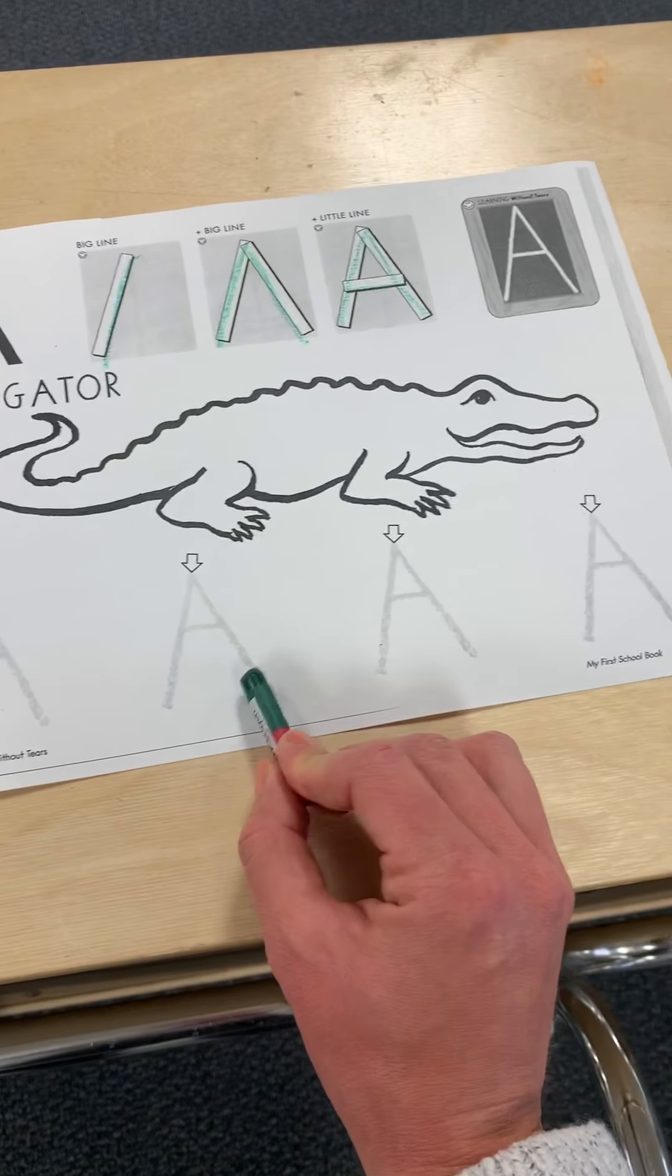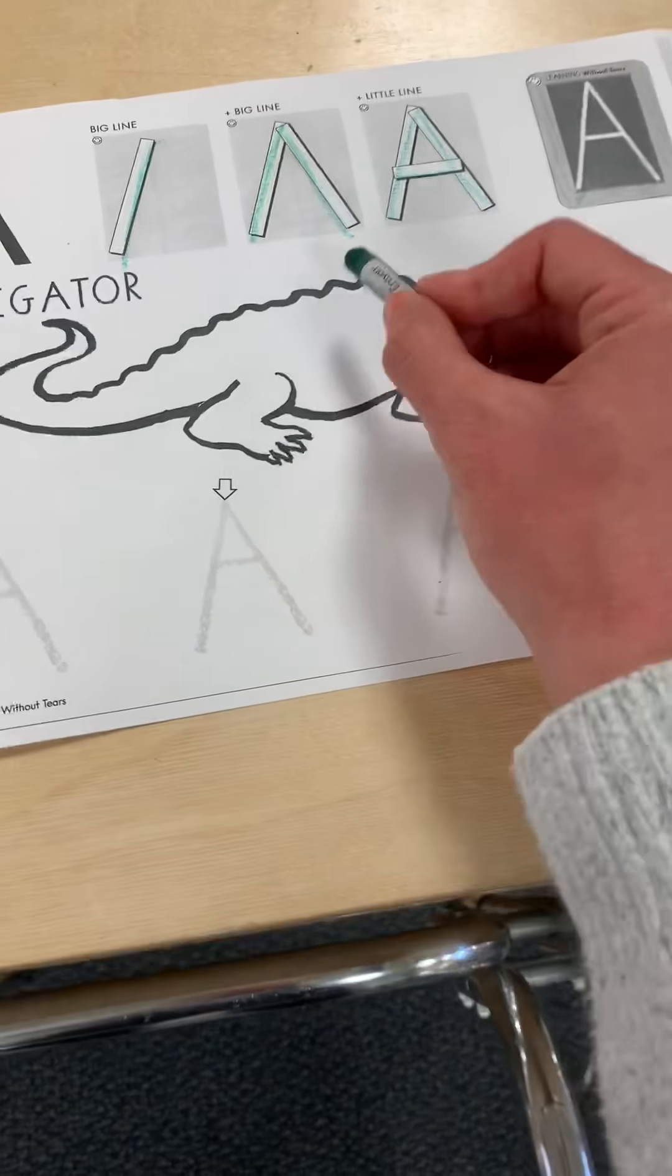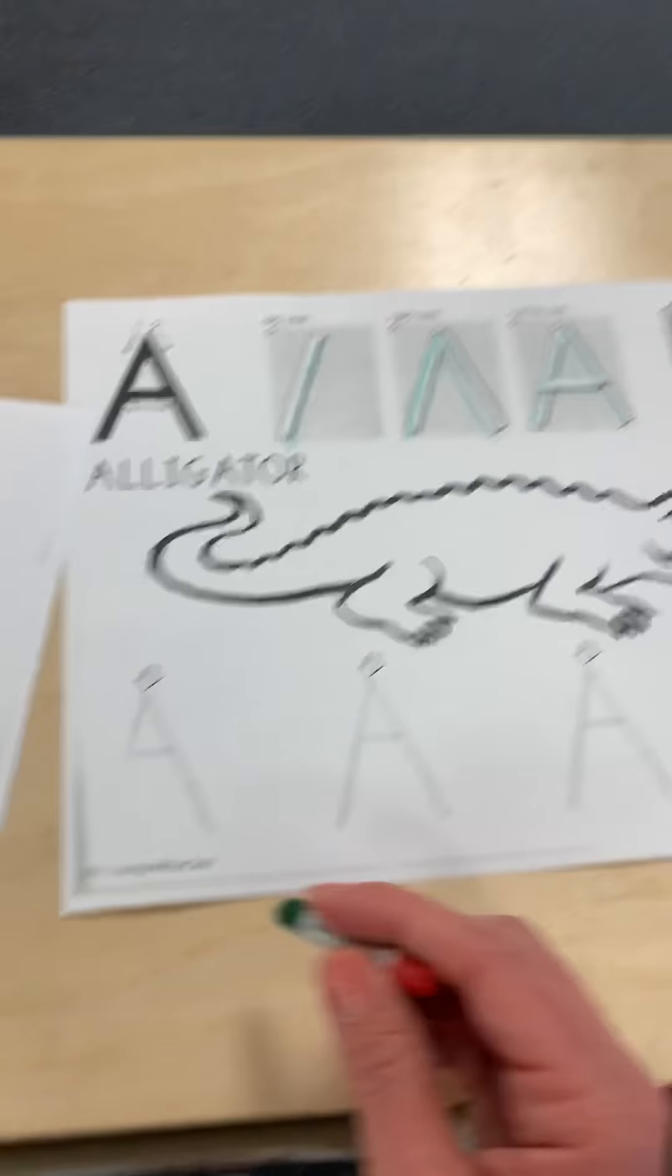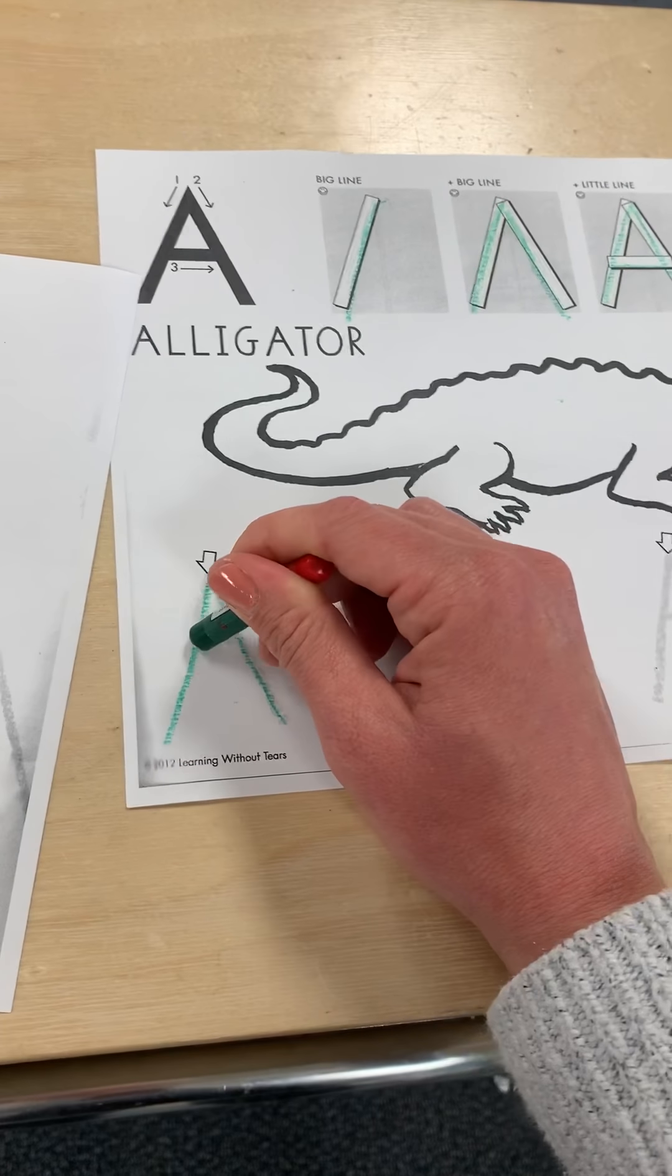Then you're gonna do that one, two, three, four more times. And then you get to color your alligator. So let's do that together. Line down, line down, line across.